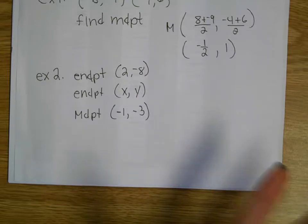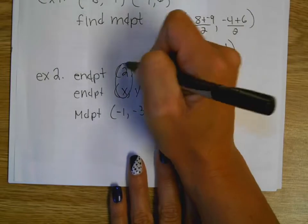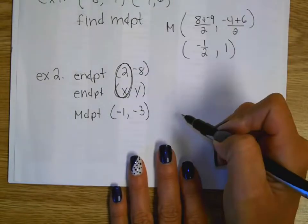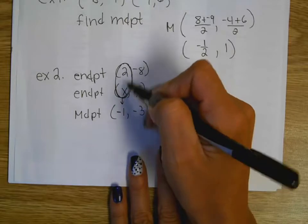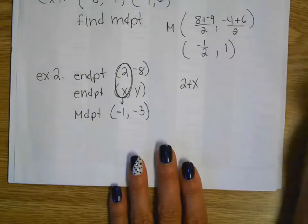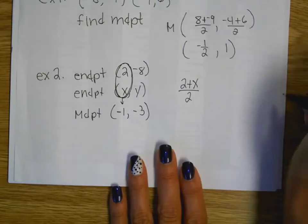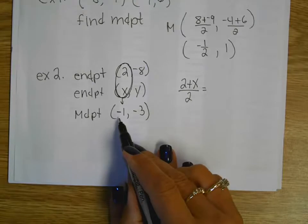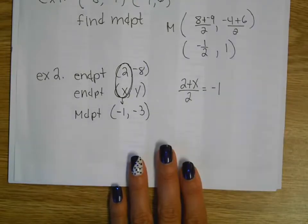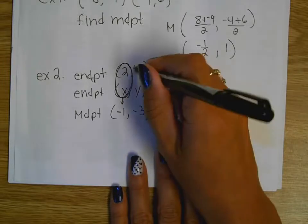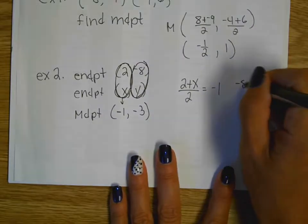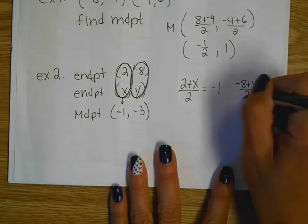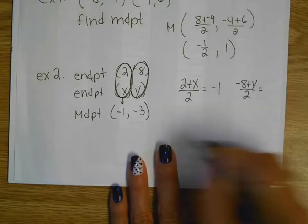So it's like having the answer to the question and finding what you started with. That's just an algebra problem setup. Remember, midpoint is just average your x's together. And when I average them together, what's my answer supposed to be? Negative 1. So I'm going to set up an equation. To average those together, I add them up, 2 plus x, because I'm averaging, divide by 2, and set that equal to the midpoint. I'm going to set up the y's too. To get this answer of negative 3, it's the average of these two things. So negative 8 plus y divided by 2 equals negative 3.